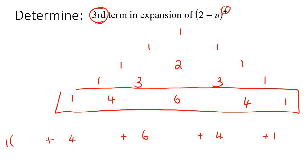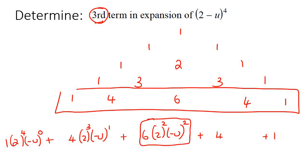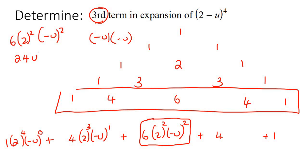We know that if we did the whole procedure, we would have put a 2 and a negative u for each bracket. For the third term, we would have taken the number 4 and counted down: 4, 3, 2 with the 2 part, and counted up: 0, 1, 2 with the negative u part. So we've got 6, then 2 to the power of 2, and then negative u to the power of 2. That gives us 6 times 4, which is 24. And negative u multiplied with another negative u becomes positive u squared. So the answer is 24u².